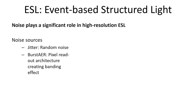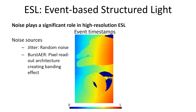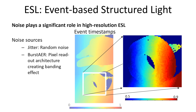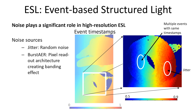Sensor noise plays a significant role in depth estimation. The events, visualized here as a time map of the tape spin sequence, generally look smooth. However, on a deeper inspection, we see the different noise sources present in the event timestamps such as jitter or burst noise.